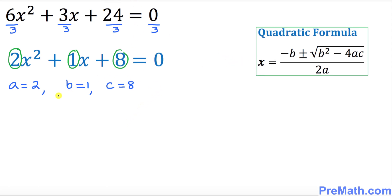So we have x equal to minus b, means this becomes negative 1 plus minus b squared, means 1 squared minus 4 times a is 2, c is 8, divided by 2 times a is simply 2.